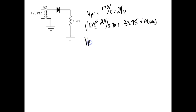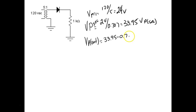Then we calculate what we call V peak out. This is going to be equal to 33.95 minus 0.7 — to account for the diode drop. What does that give me? 33.25.